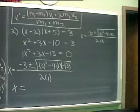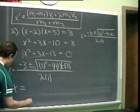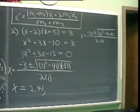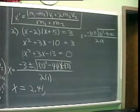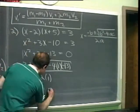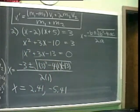Recall that stored square root value, hit equals, don't forget to hit the equal sign, then divide by 2 and hit equals. I get 2.41. Then do the minus sign: minus 3, minus the stored square root, equals, divided by 2, equals — I get minus 5.41. Those are the two solutions for the plus and minus square root respectively.